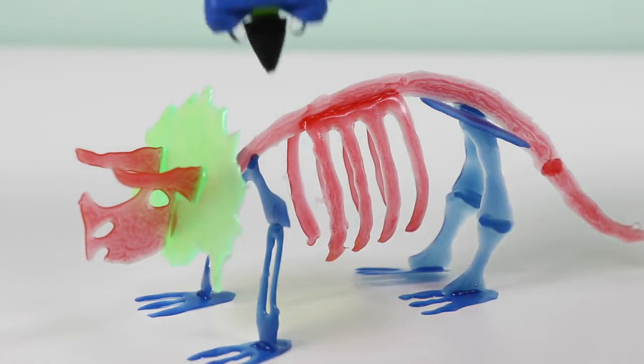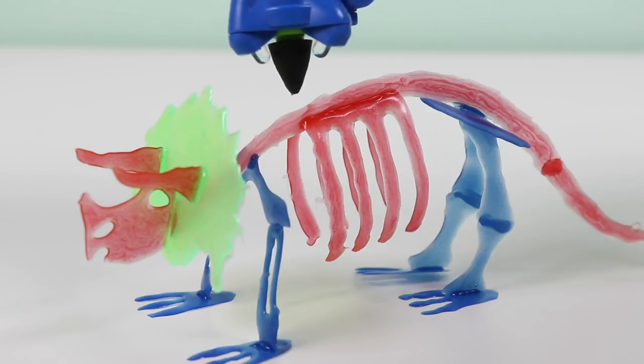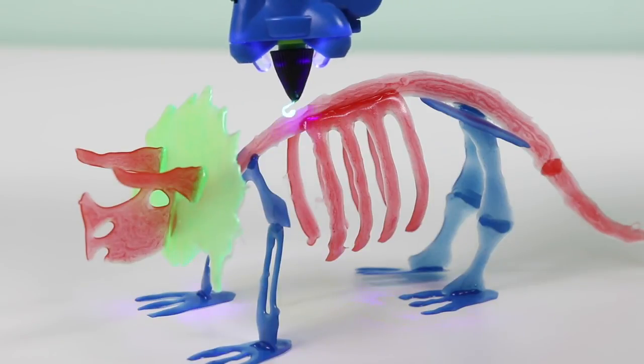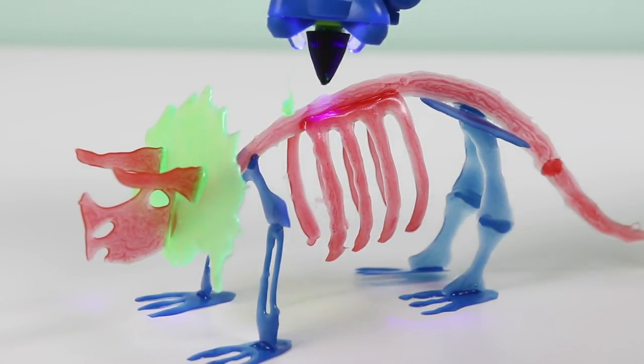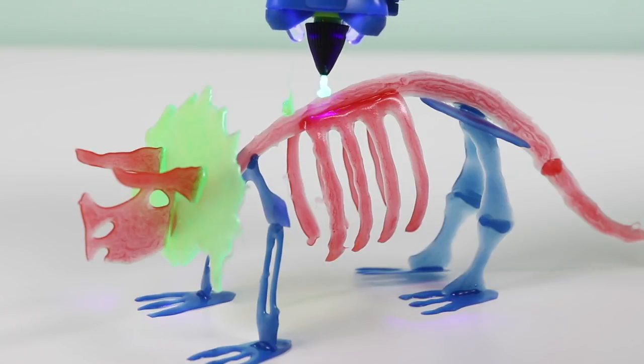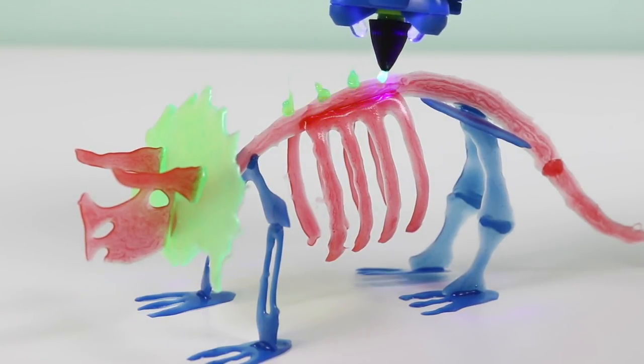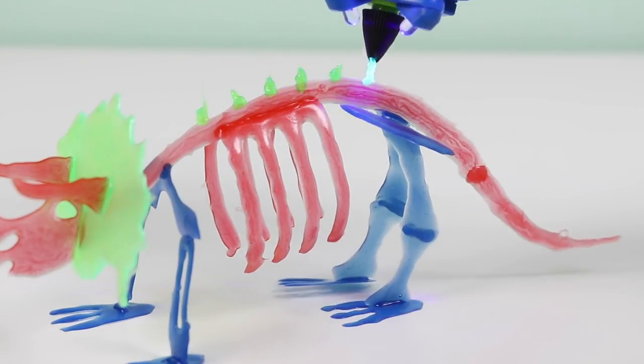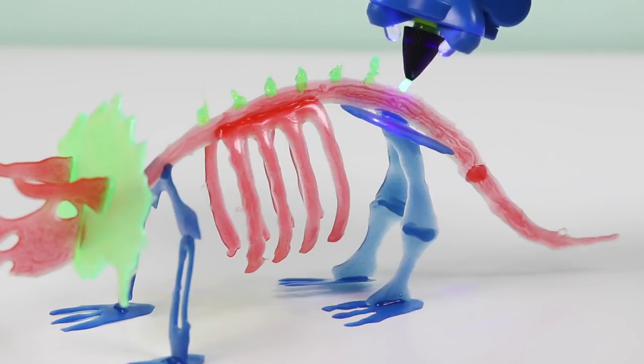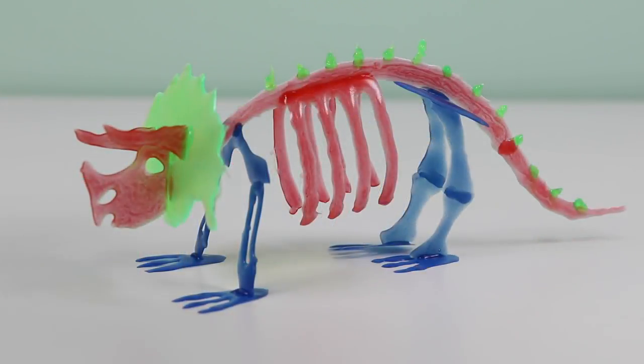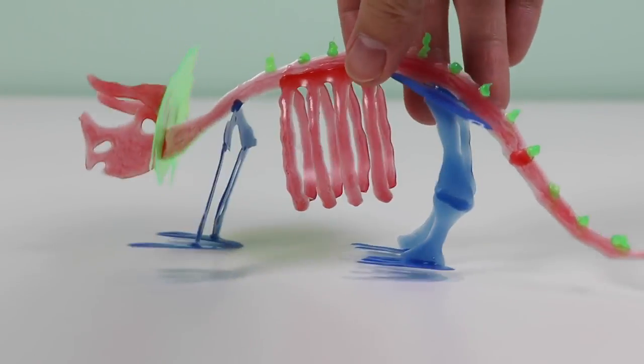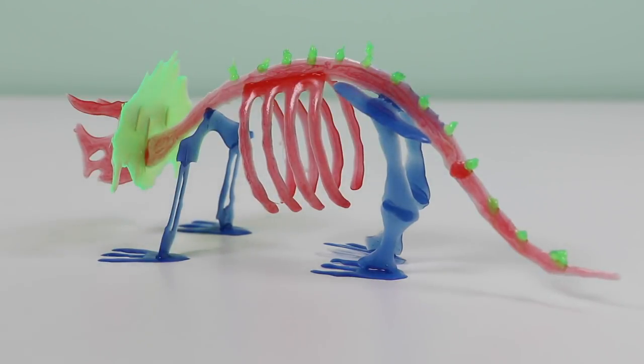Use the green gel again to make spikes. Light it up as I go. Now it's complete! What do you think? Be sure to give this video a bunch of likes and we'll try to do another one when we can.